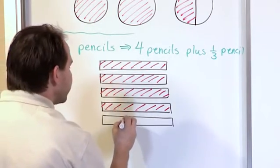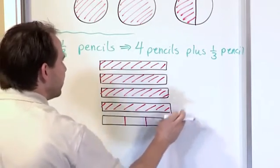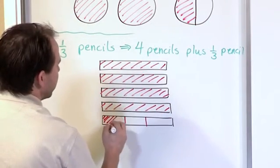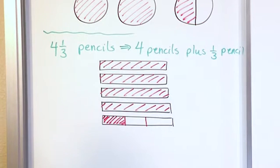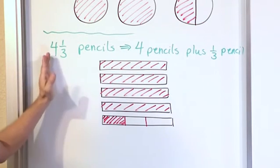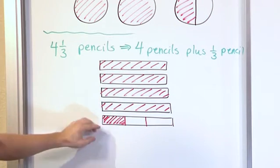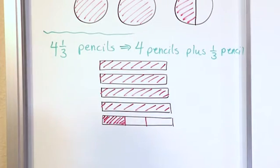But if I have one third of a pencil, I have to divide the last pencil into three pieces because the bottom number is three. And then the top number means I only have one third of that last pencil. So if these were pencils here, this would represent four and one third pencils. One, two, three, four pencils plus part of another one, one out of three pieces to make that one third there.